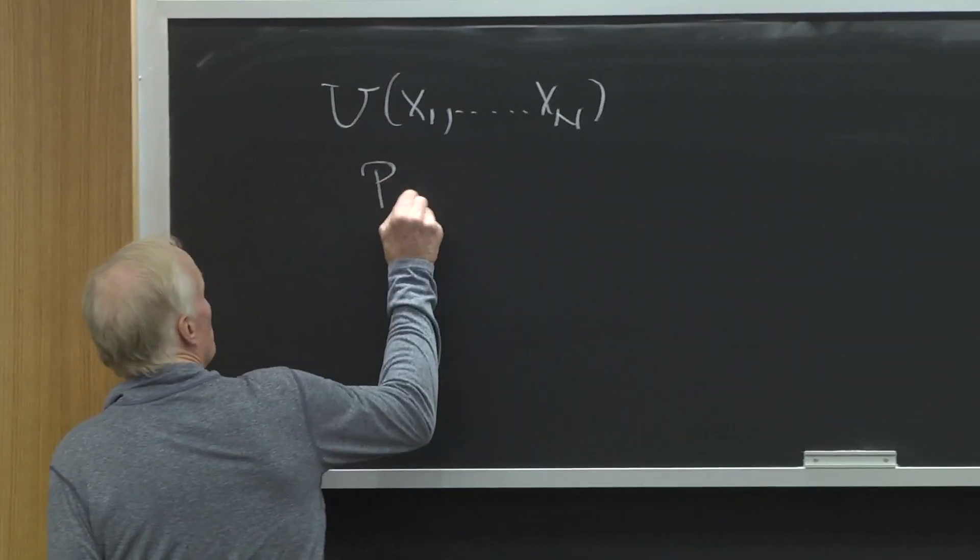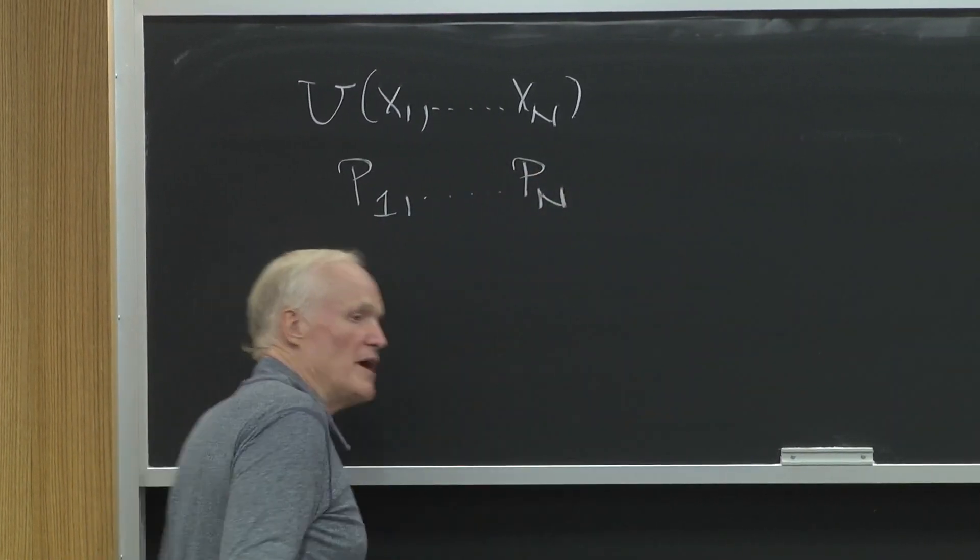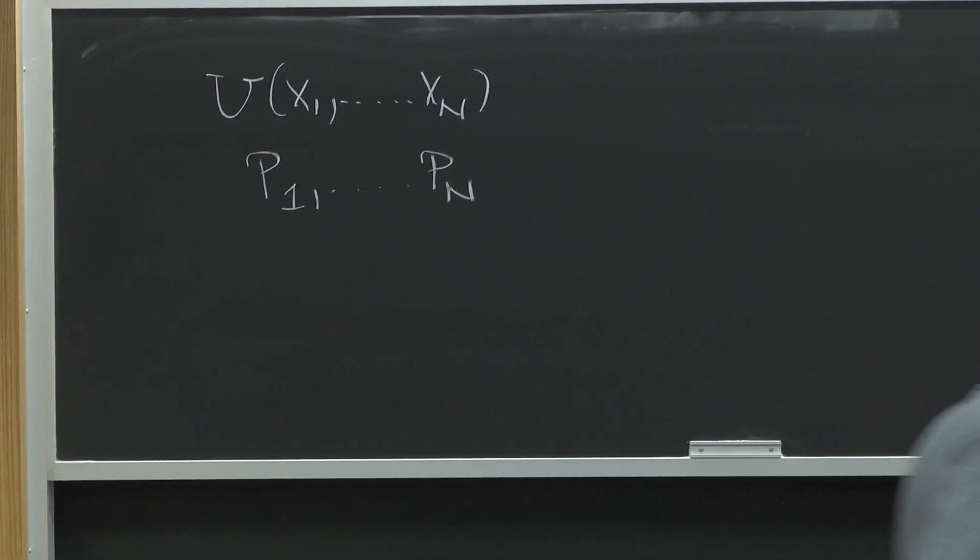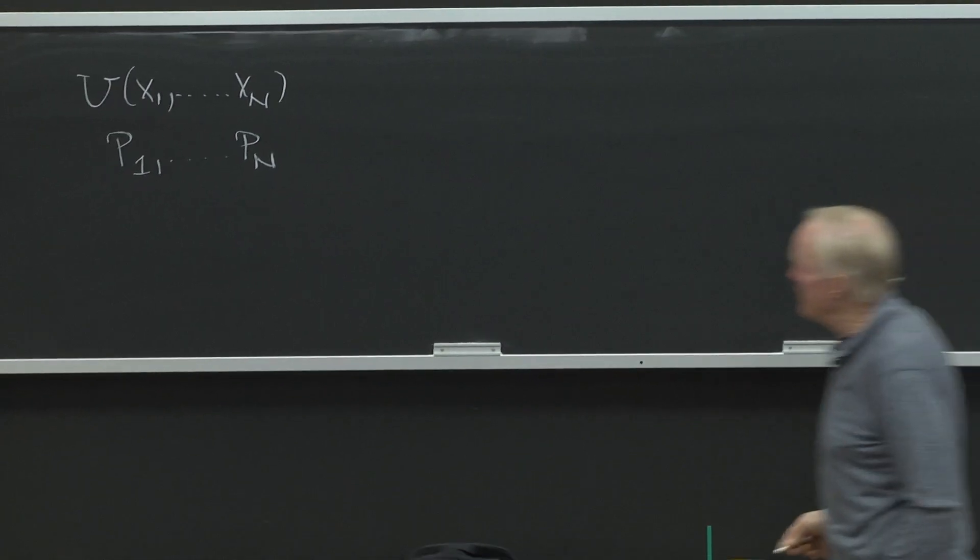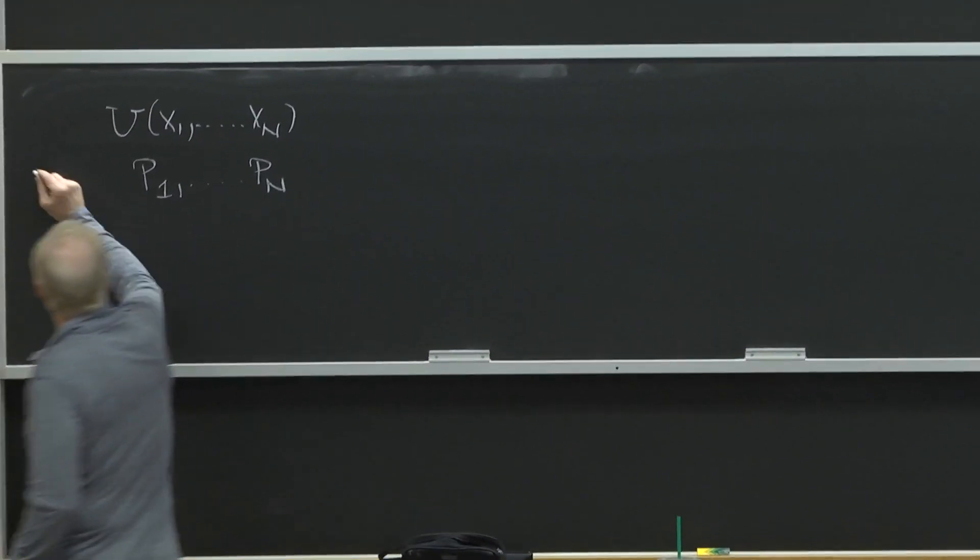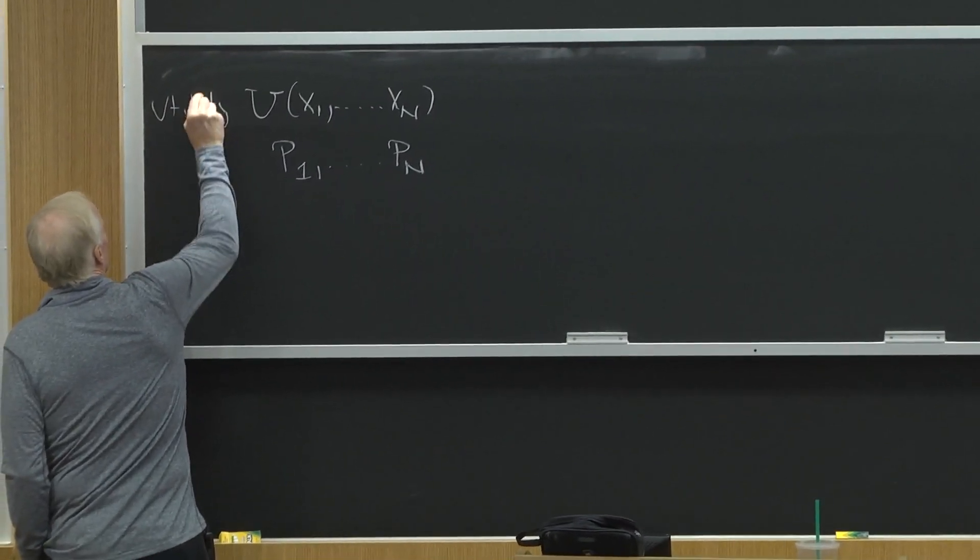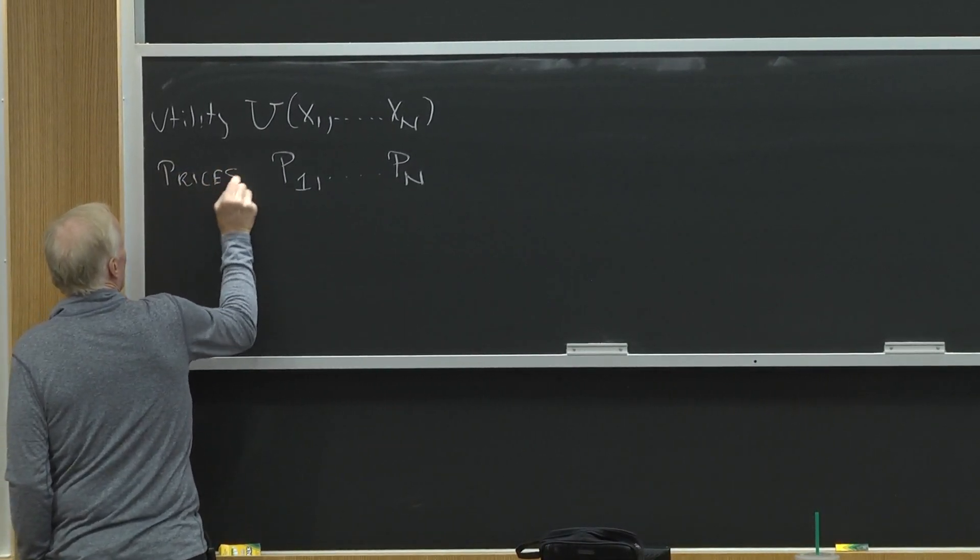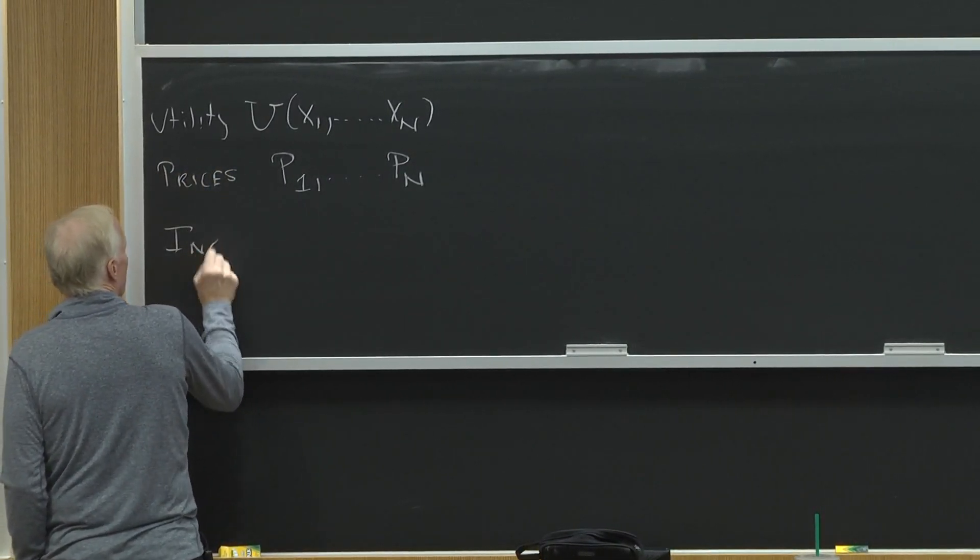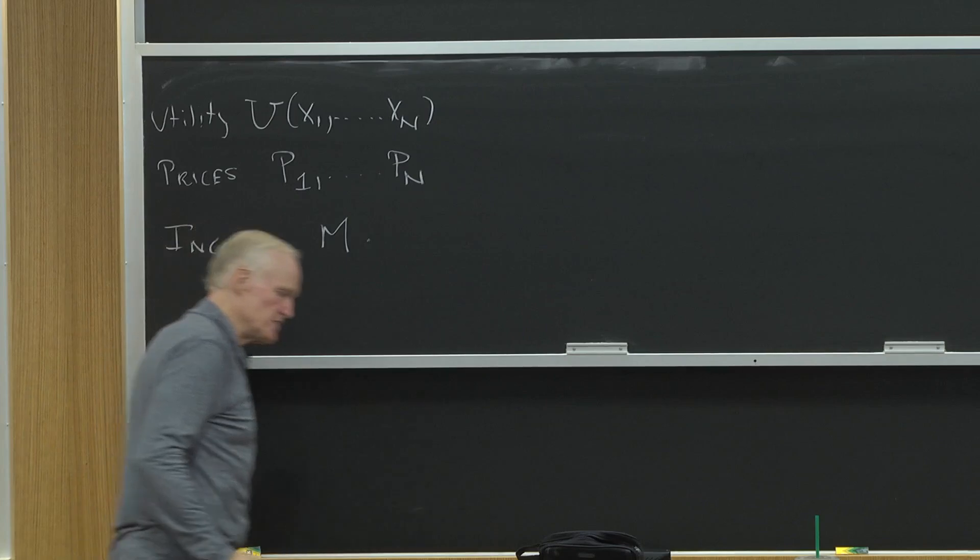Now we're going to assume that you're buying them at prices P1 up to Pn - the prices of each of those goods. And we'll assume that you have, so this is utility, these are the prices, and we'll have your income. I'm just going to assume your income is M. That's your income.